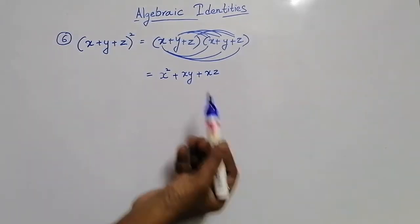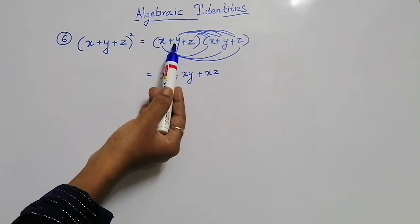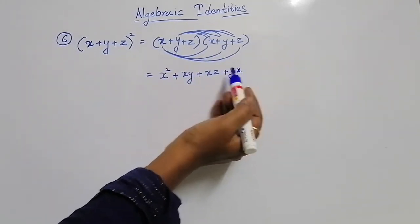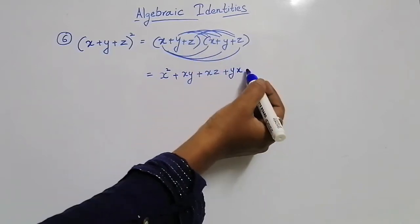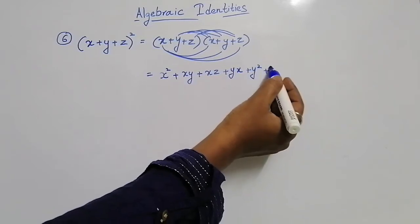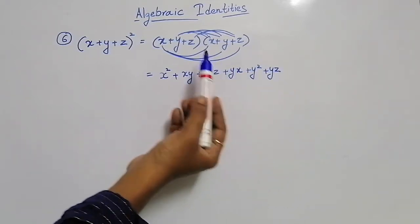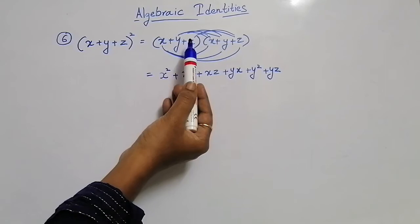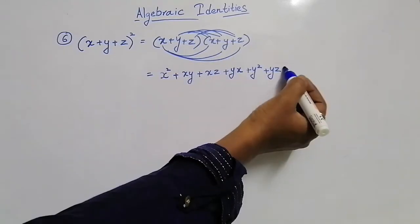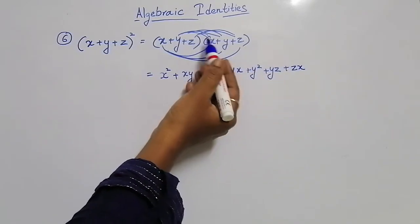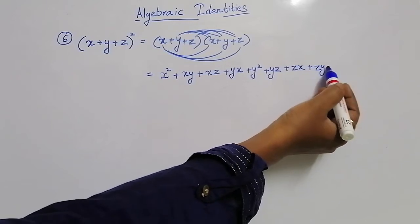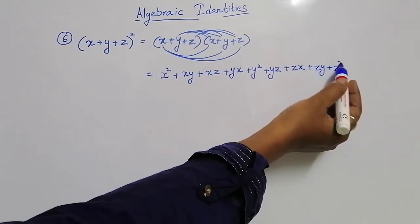Now the x term is over. Now multiply the y term. Plus y into x is plus yx. Plus y into y is plus y square. Plus y into z is plus yz. Now y term is over, students. Next, multiply with z. Plus z into x is plus zx. Plus z into y is plus zy. Plus z into z is plus z square.